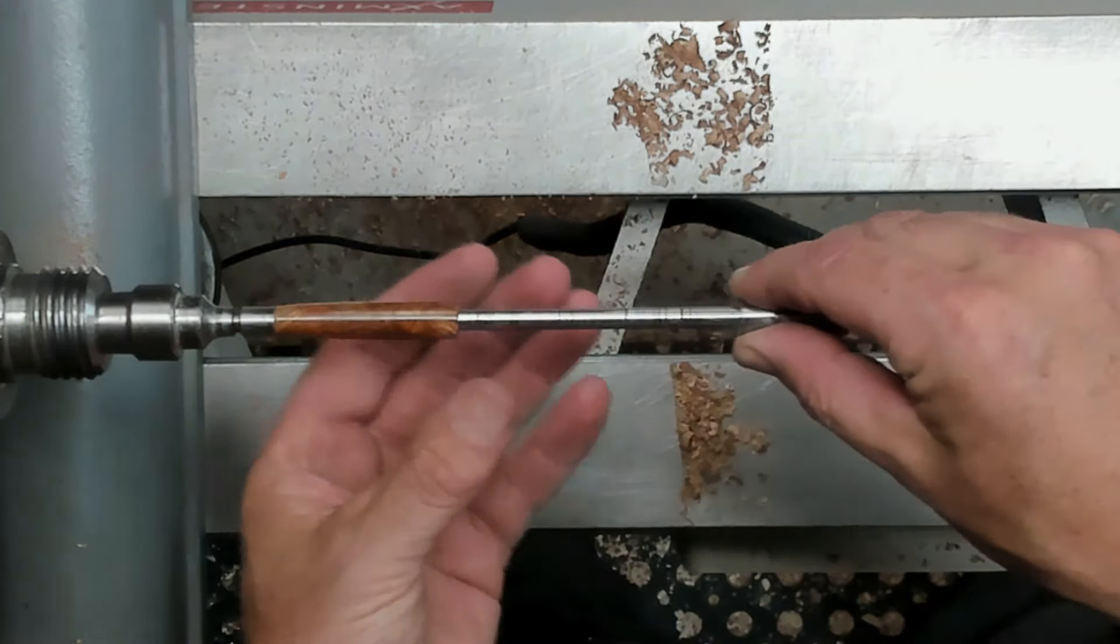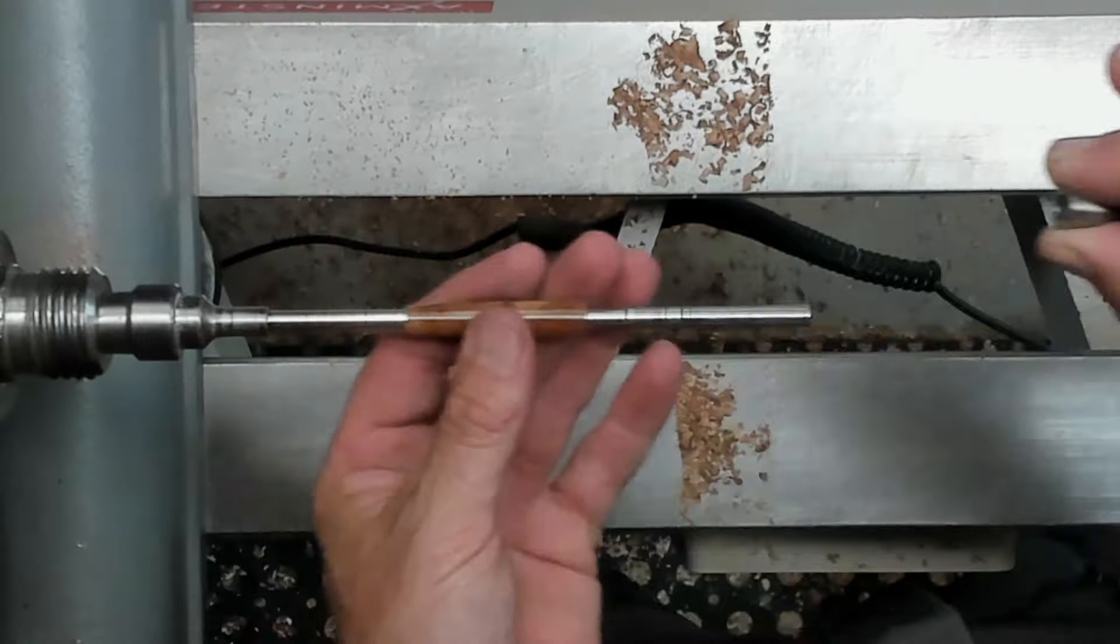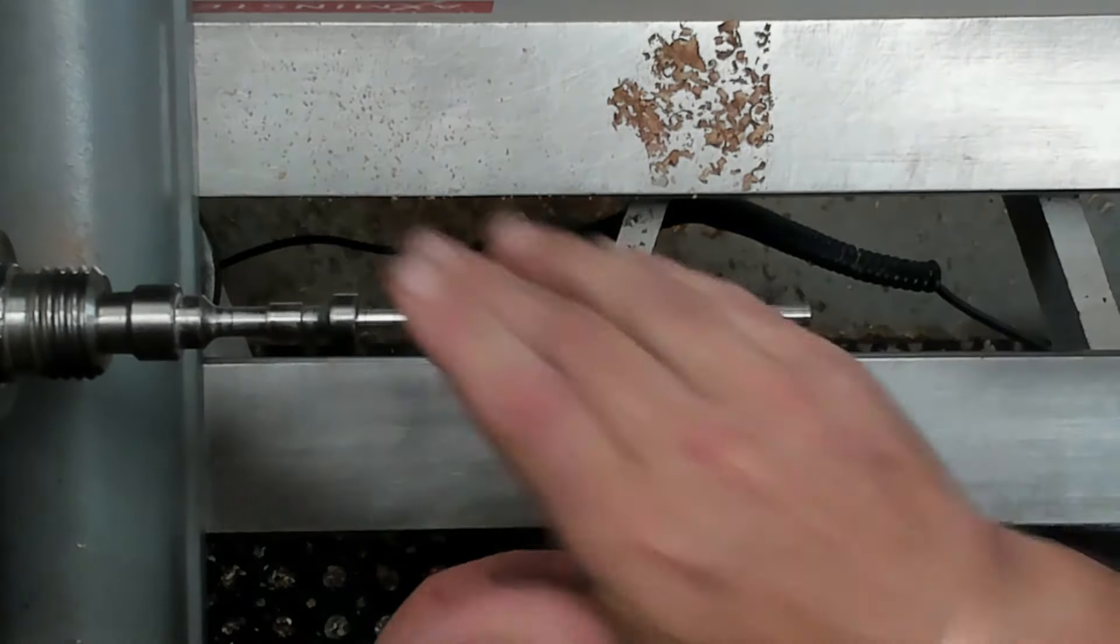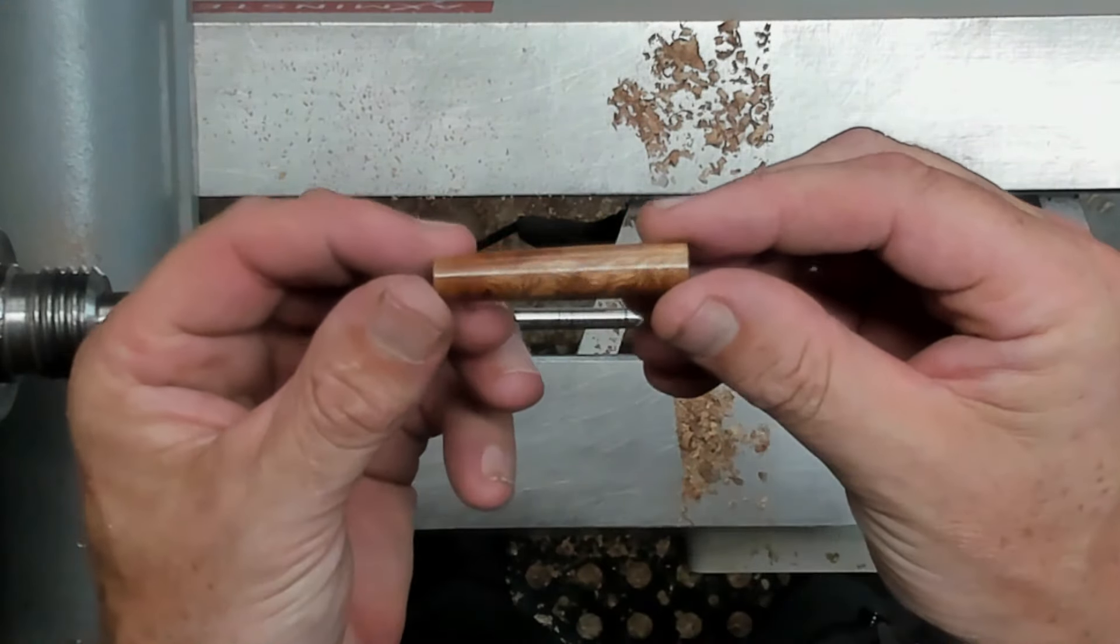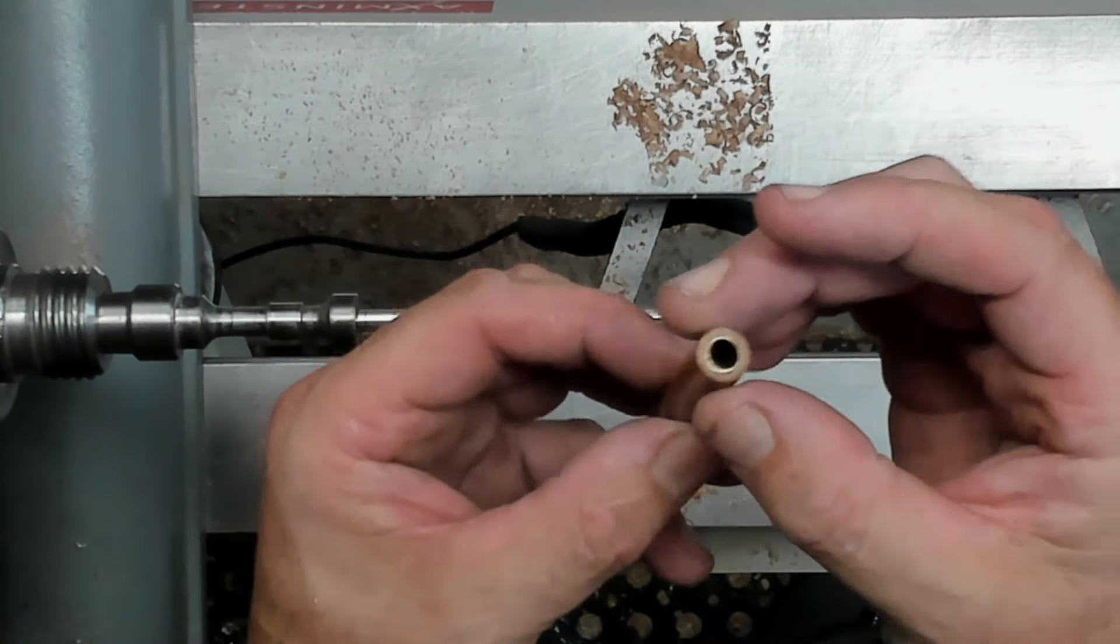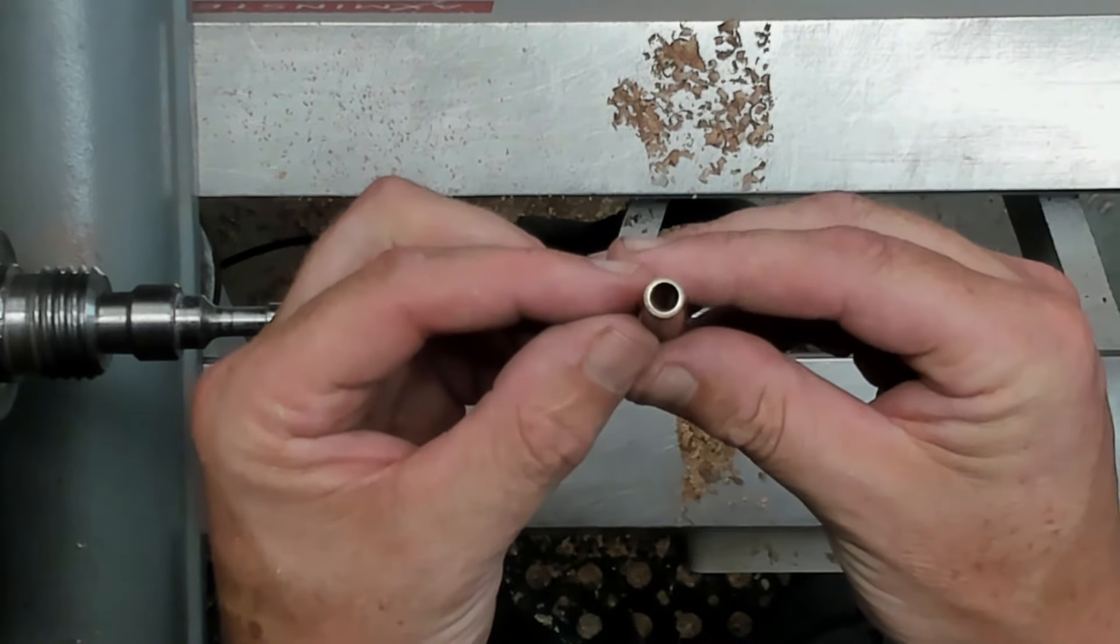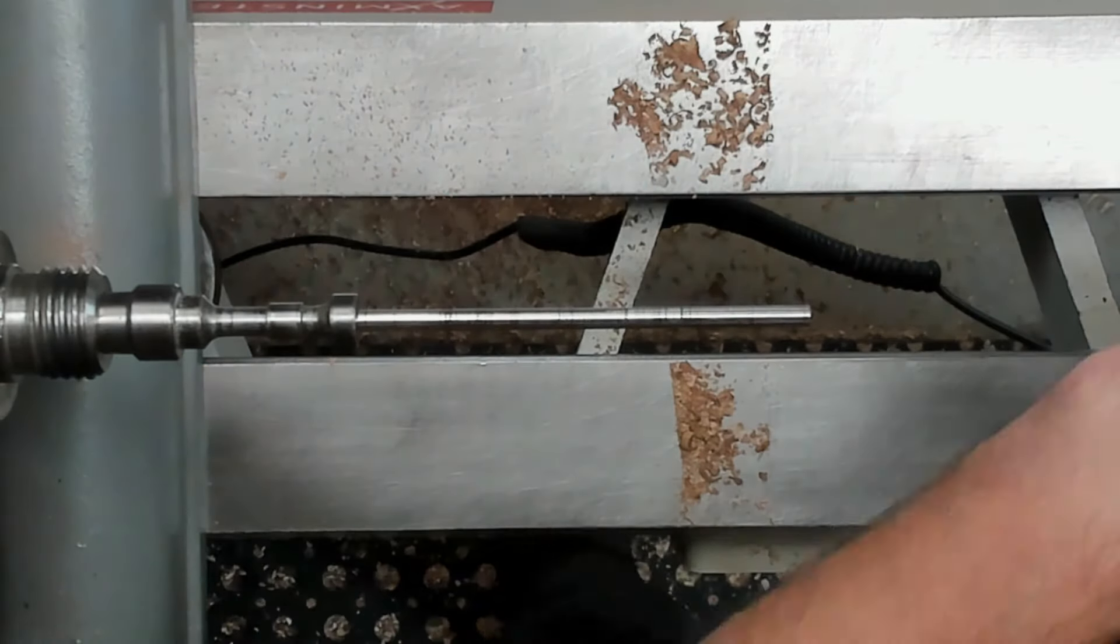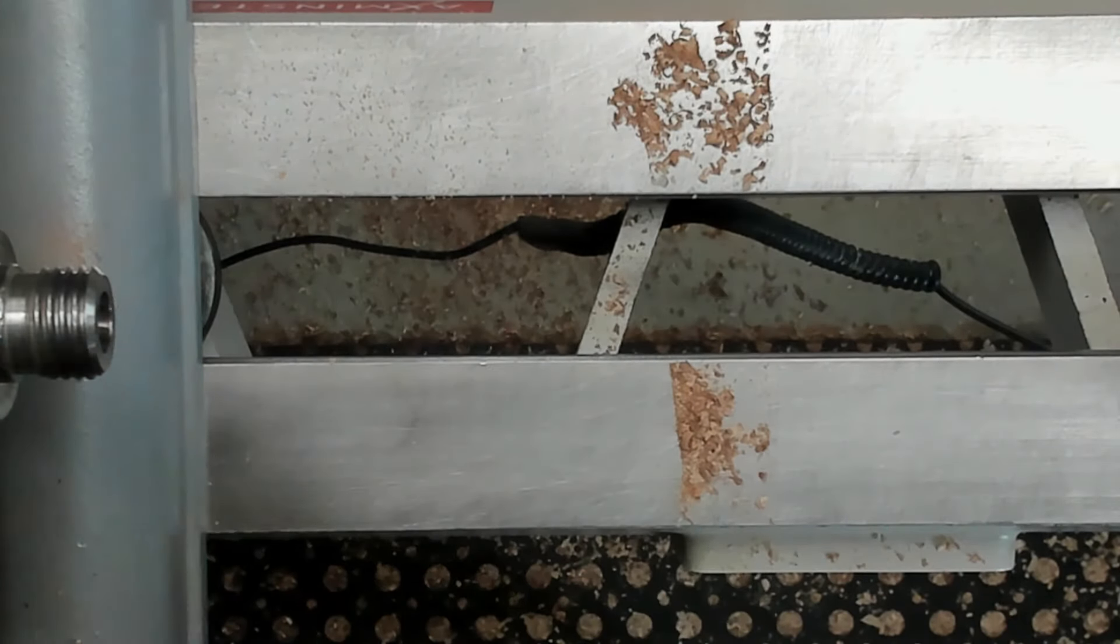For a finish, this is microcrystalline wax stick from Hampshire Sheen or Penn Turner's Overcoat, whatever you want to call it. The lathe is running at only about 600 or 700 RPM, so just put a nice little coat of wax on, like that.